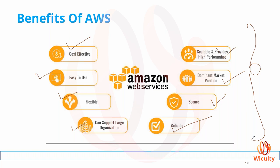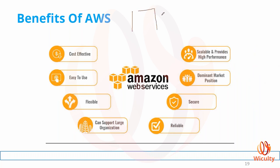AWS has grown so much that there are 175-plus services available. You name a requirement from the IT field — deploy a web application, mobile application, IoT, blockchain, big data, machine learning, artificial intelligence, or satellite communication — AWS already has a service for it. Once you're in AWS, you don't need any other cloud vendor or third-party software.